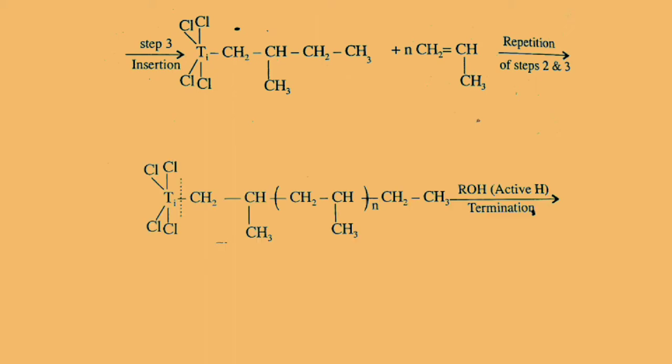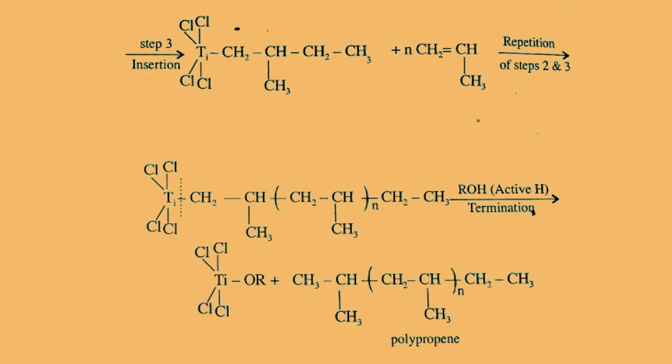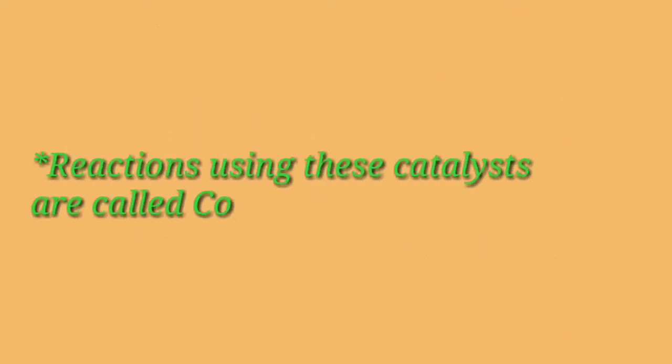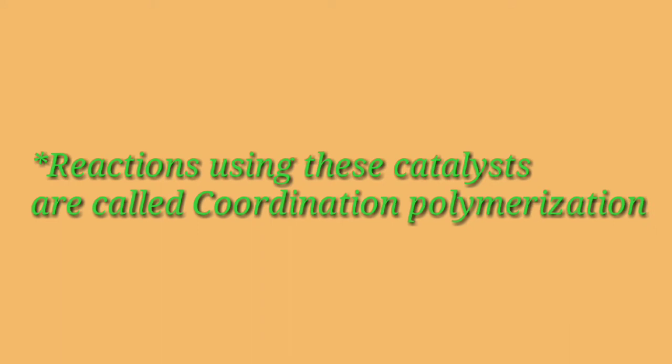Then finally, with the help of an active hydrogen atom obtained from an alcoholic group, it undergoes termination to give the formation of polypropene. Reactions using this catalyst are known as coordination polymerization.